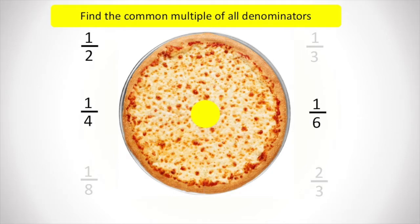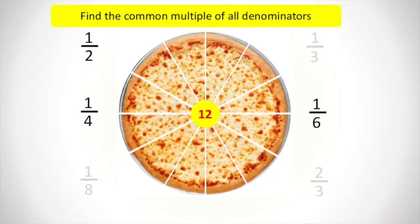In the last example, we have three fractions, one half, one fourth and one sixth. What will be the lowest common multiple of these three denominators? It will be 12. So one half will become six out of 12, one fourth will become three out of 12 and one sixth will become two out of 12.